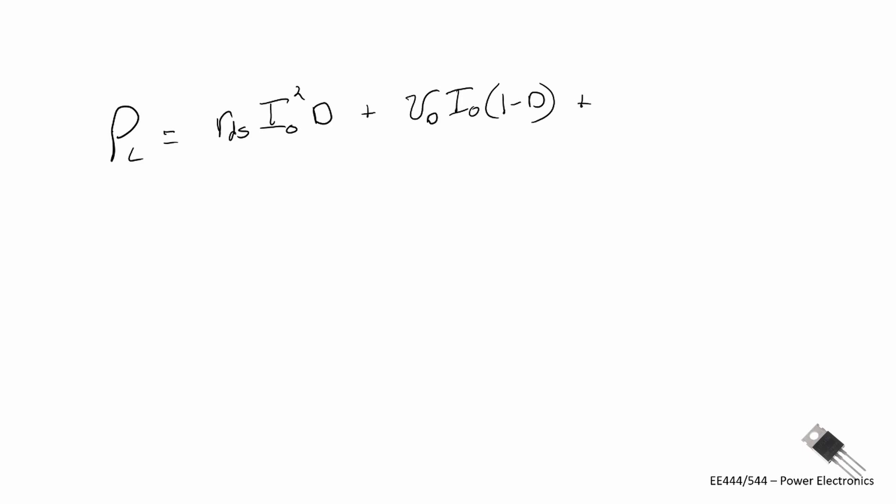Plus the equivalent series resistance of our inductor. And I'm going to ignore the ripple current through the inductor and just use its average value. And then finally, the loss in the capacitor, the conduction loss in the capacitor. And we still need to get the switching loss in the MOSFET. And we'll cover that in the second part of this video sequence.